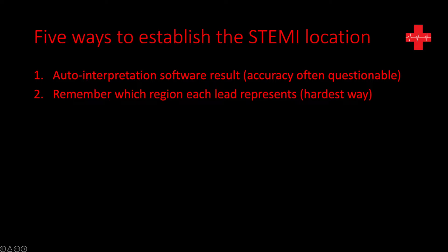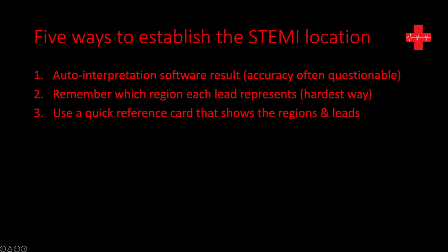You could simply remember which region is represented by which lead — just learn that V1 is this area, V2, lead 2, etc. But that is quite hard because it is pure memorization. You could also use a quick reference card: pocket-sized cards that list all the leads with different colors, so you can refer to them and determine which combination of elevations corresponds to which region. But that requires you to have the reference card on hand.